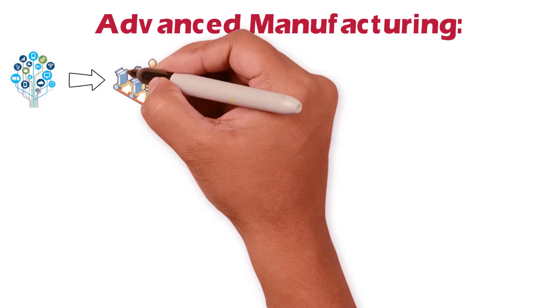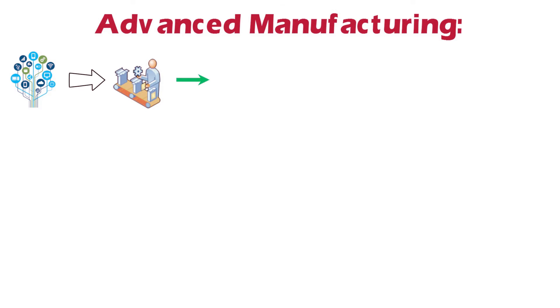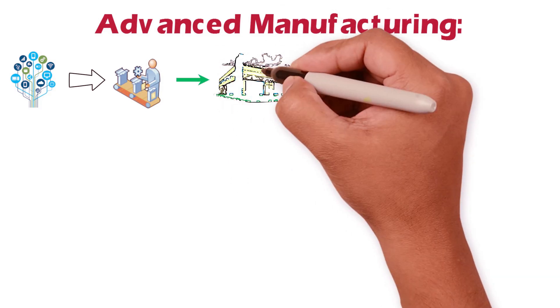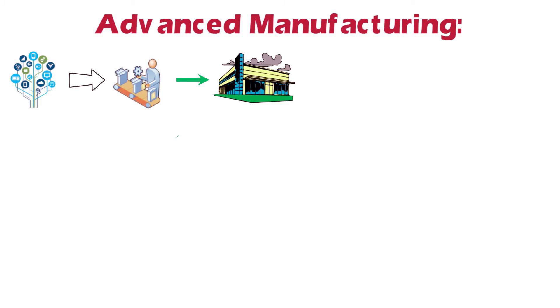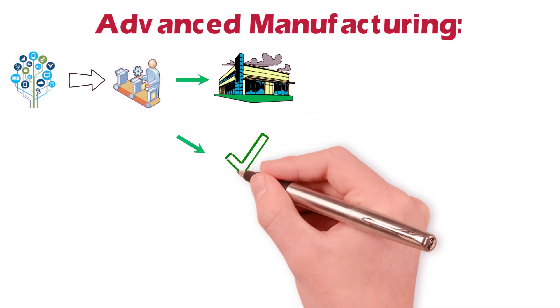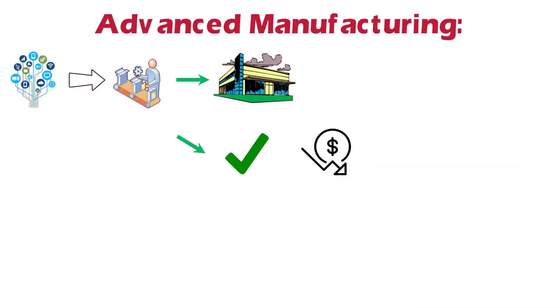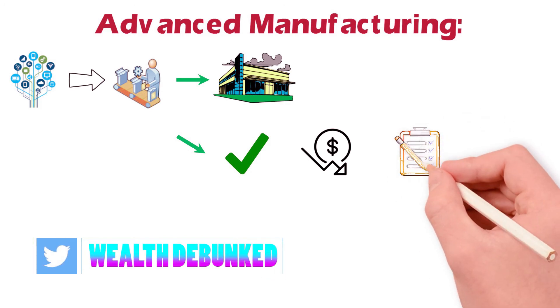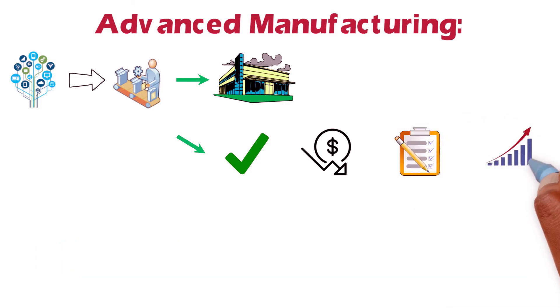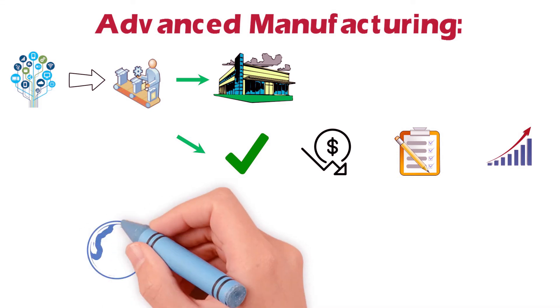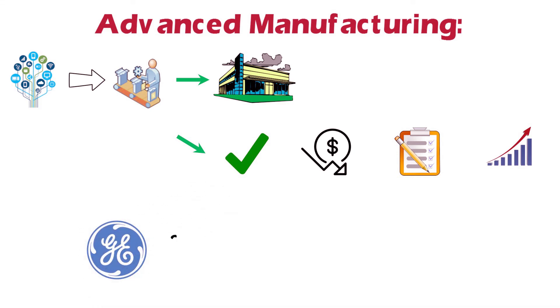Advanced manufacturing is the use of innovative technology to improve products or processes, with the relevant technology being described as advanced, innovative, or cutting edge. Advanced manufacturing industries increasingly integrate new innovative technologies in both products and processes. These technologies are being introduced at a faster rate to help improve quality, reduce costs, increase flexibility, improve responsiveness, and generally close the competitiveness gap.